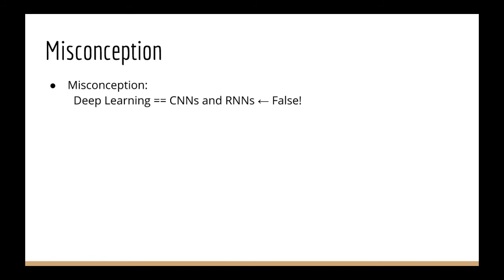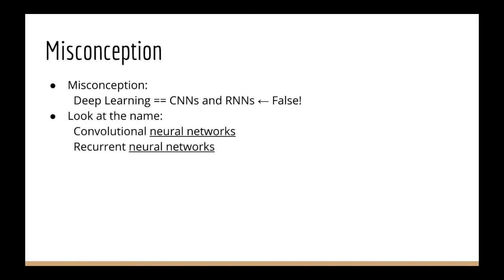The first misconception I'd like to talk about is this. A lot of people assume that to do deep learning, you have to be using convolutional neural networks and recurrent neural networks. This is very wrong. If you look at the name, convolutional neural networks, we see that it has the term neural networks. We don't call it convolutional deep learning. Nobody says convolutional deep learning. We say convolutional neural networks.